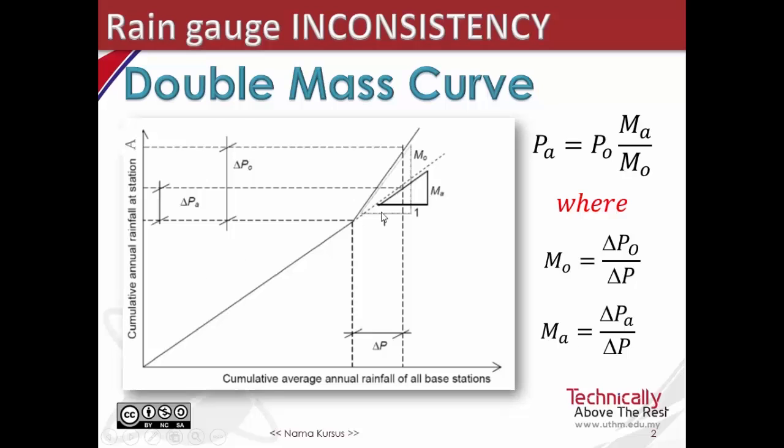So lastly, adjust the measured precipitation of gauge A using the general equation. PA equals to PO multiplied with MA over MO. PA is the adjusted precipitation value at station A, and PO is the original precipitation value at station A.